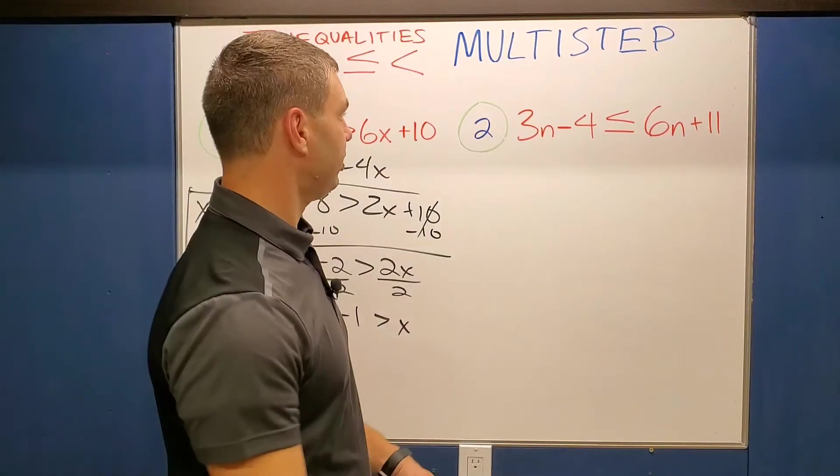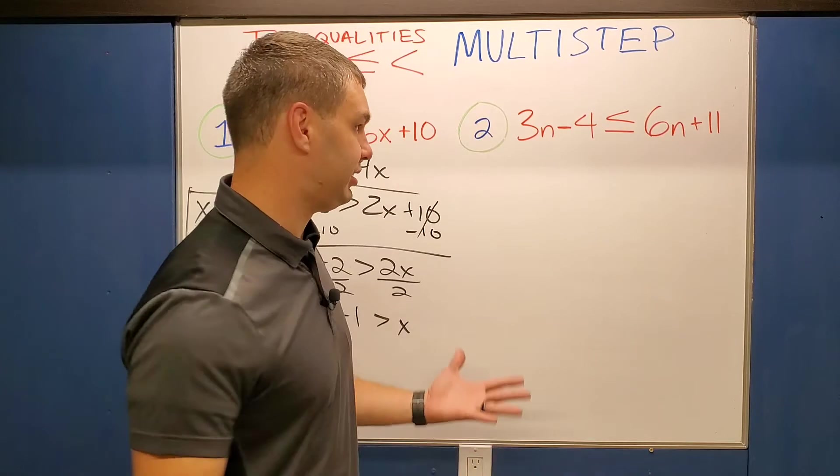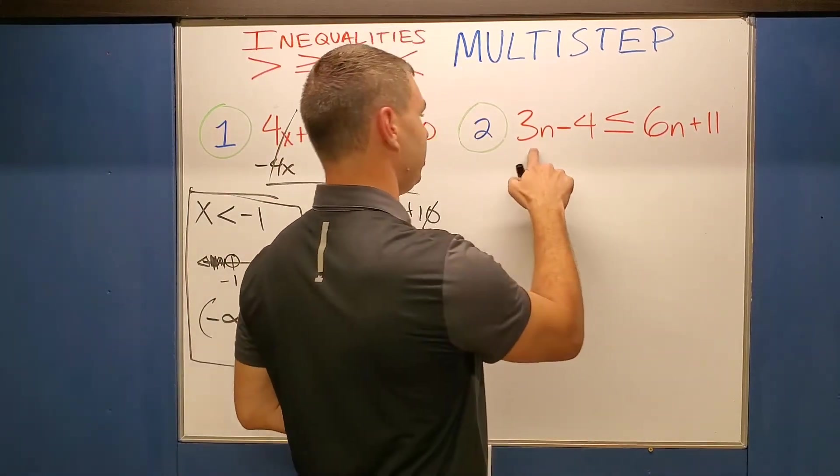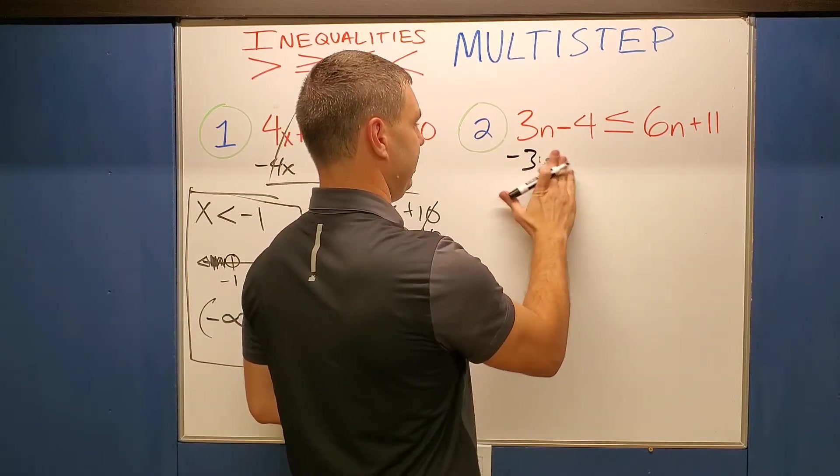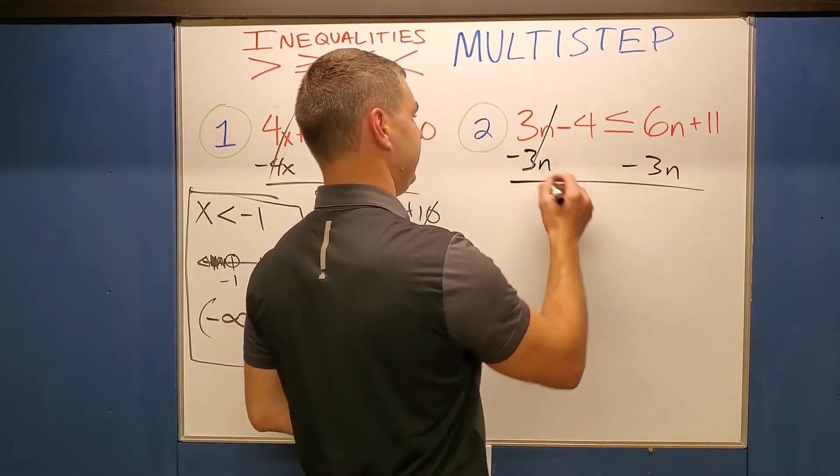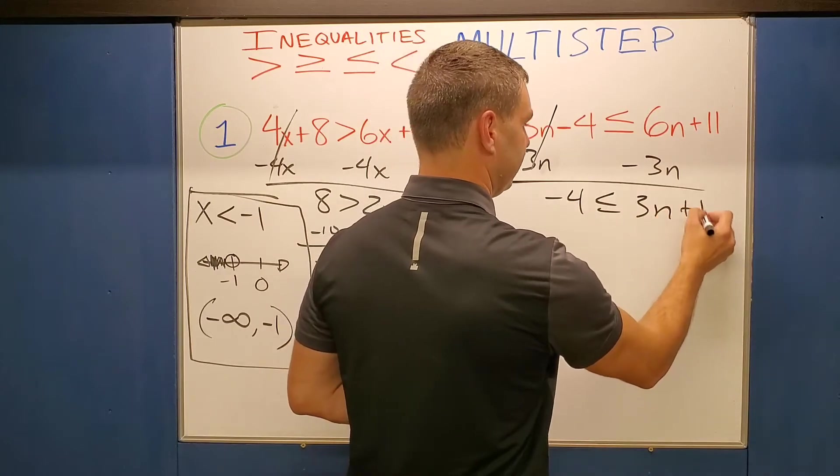Number 2. Number 2 says 3n minus 4 is less than or equal to 6n plus 11. Alright, so same idea. We have n's on both sides. That's our variable. Probably want to move our smaller one over. That way we can have a positive. So in this case, I almost did an x. How about an n. Subtract 3n on both sides. Those cancel. Negative 4 is less than or equal to 3n plus 11.